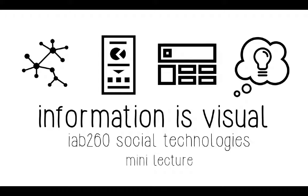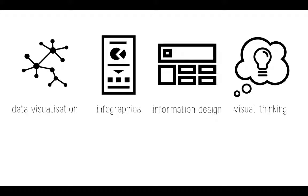This mini lecture provides an introduction to the idea that information is visual. We are going to look very briefly at four things: data visualization, infographics, information design, and visual thinking. We're looking at these four things because they are either ways of representing data or information visually, or they are practices and disciplines that can inform the way we organize information visually.